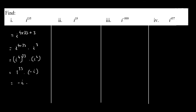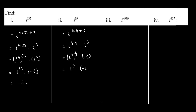Next, we find the value of i raised to the power of 19. We write 19 as 4 times 4, which is 16, with a remainder of 3. So we have i^(4×4) multiplied by i^3. Since i^4 equals 1, i^(4×4) simplifies to 1 raised to the power of 4, which is 1. Multiplying by i^3 gives us negative i.